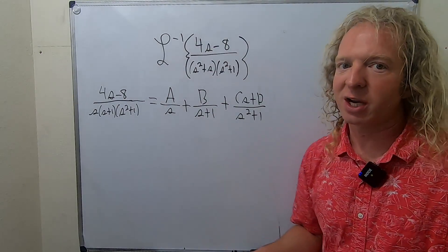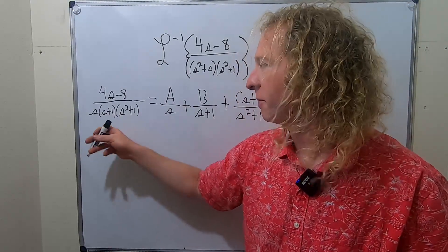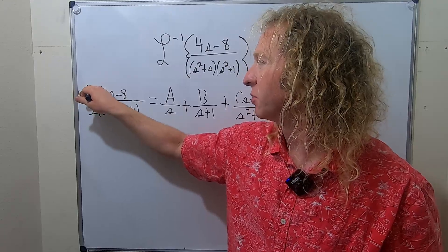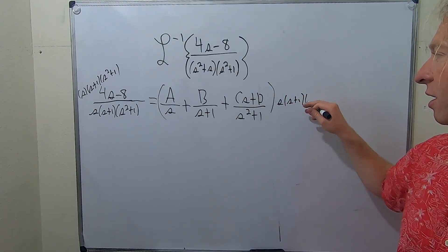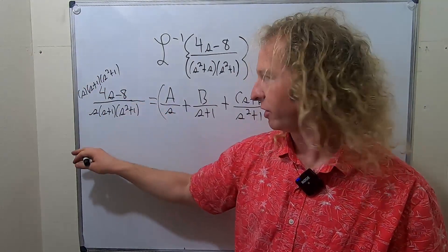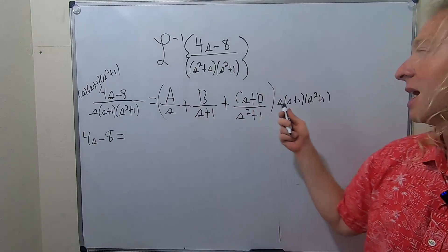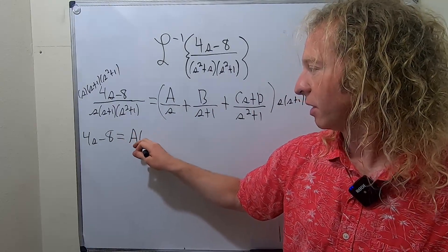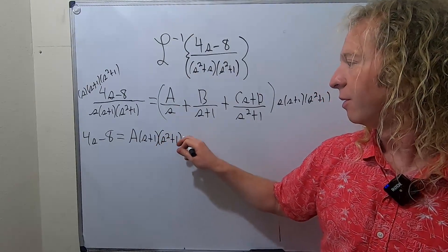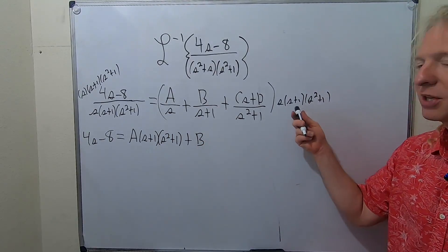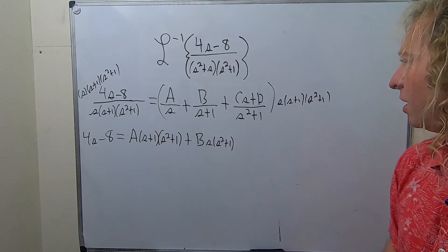The next step in partial fraction decomposition is to eliminate the fractions. You multiply both sides by the denominator: s times s plus 1 times s squared plus 1. All of these cancel, so you're left with 4s minus 8 equals A times s plus 1 times s squared plus 1 — the s cancels — plus B times s times s squared plus 1.